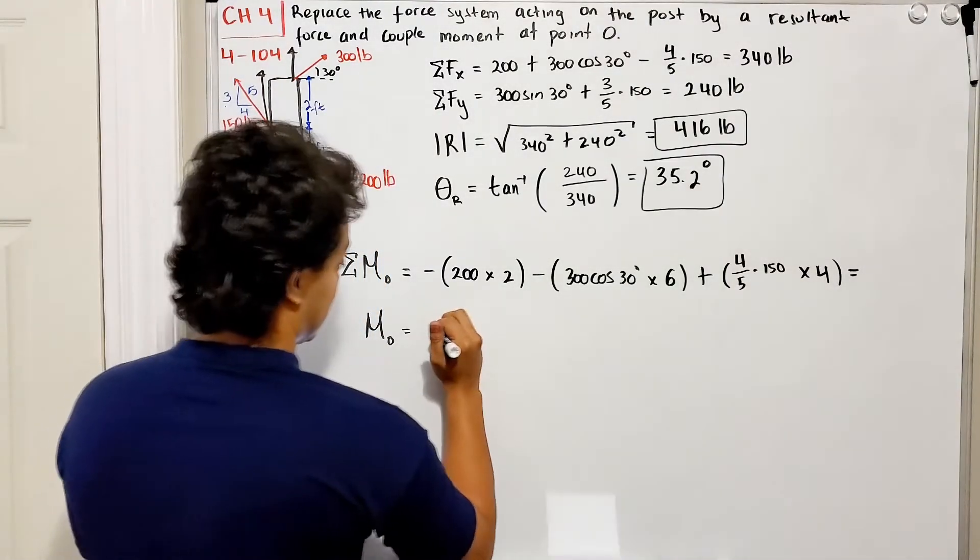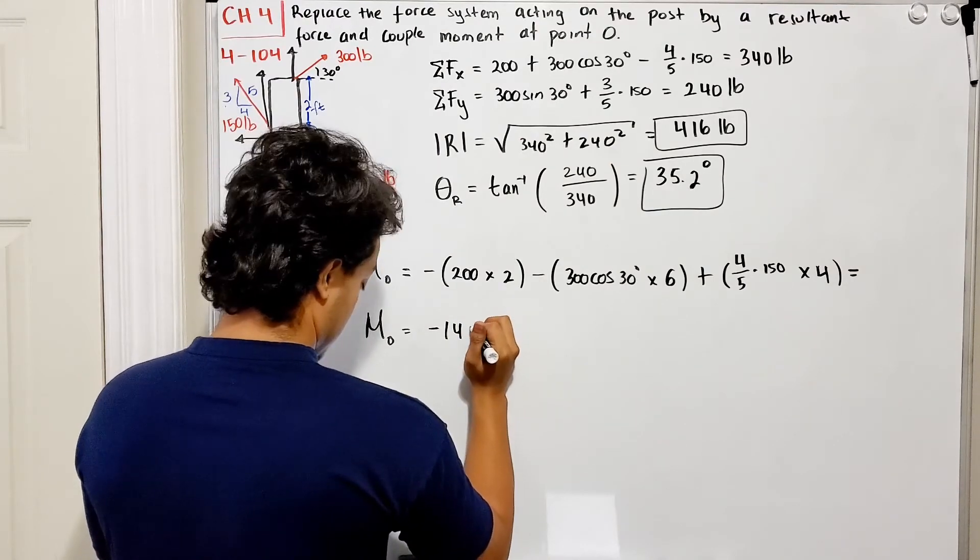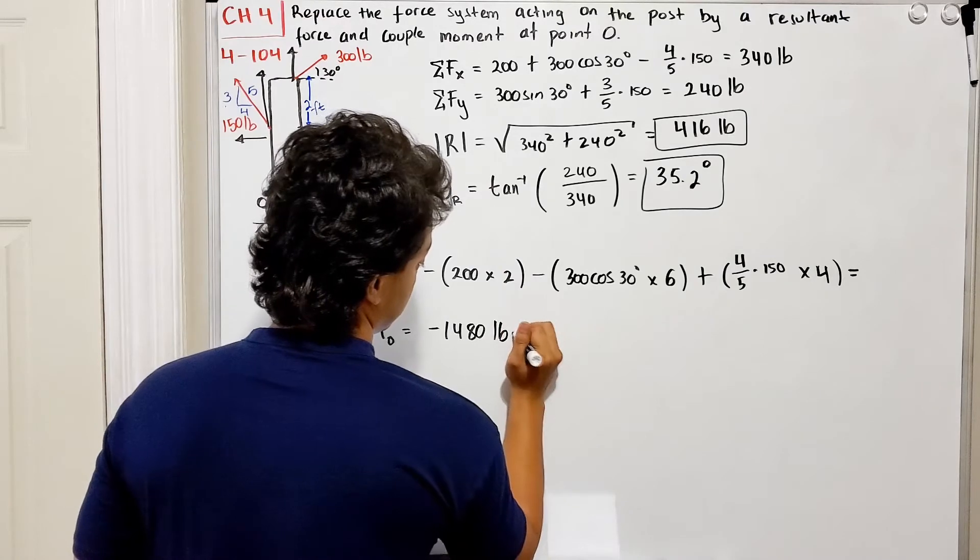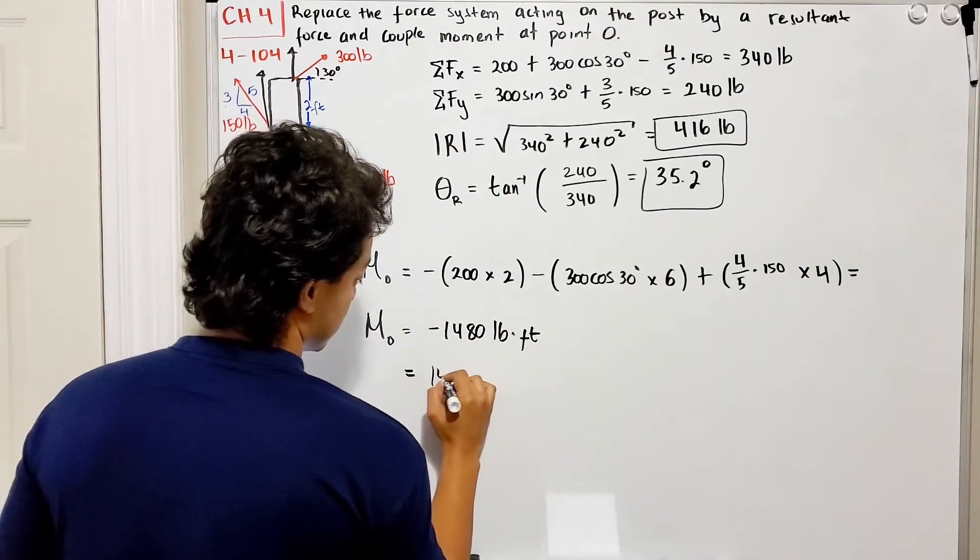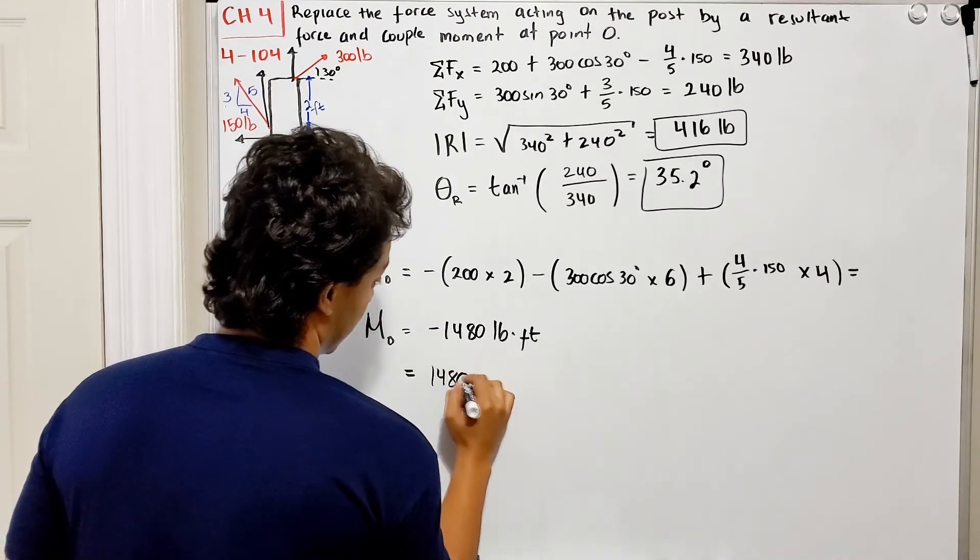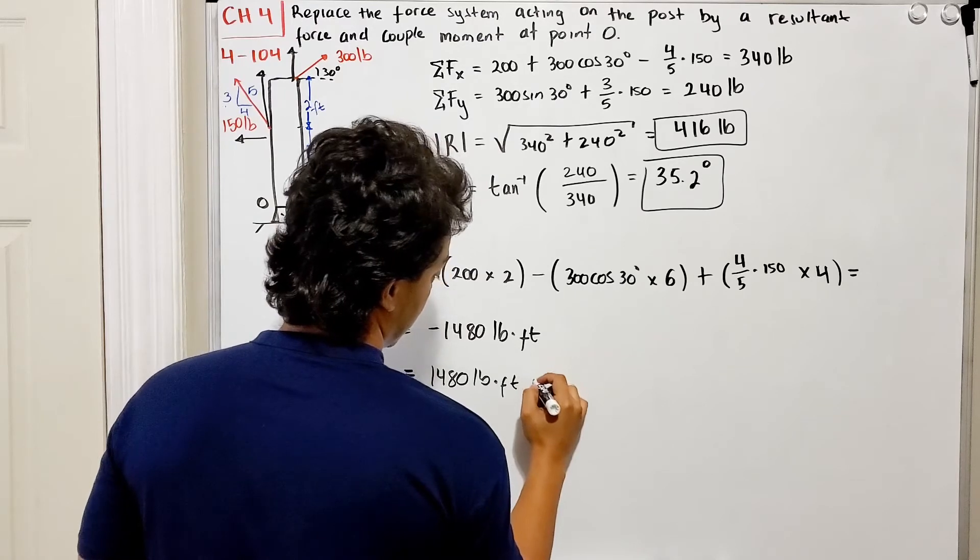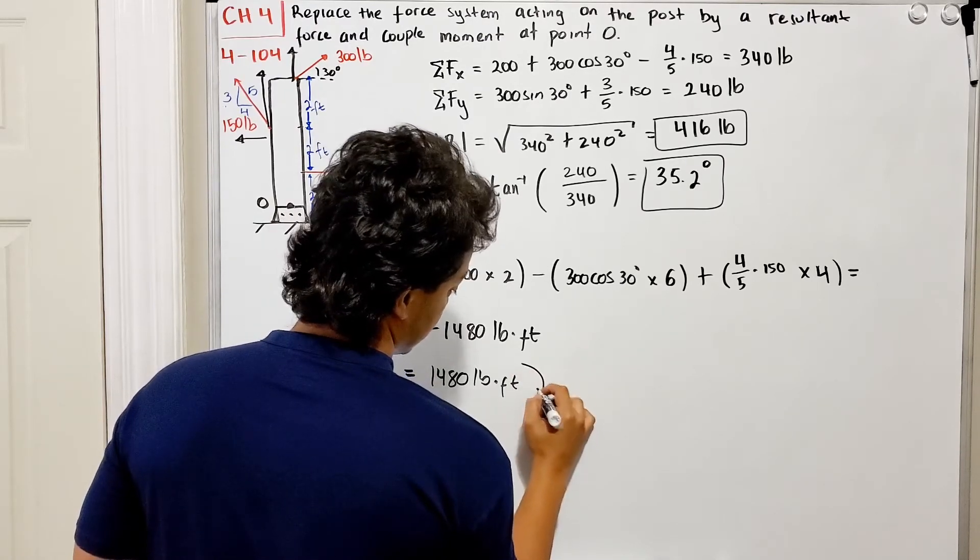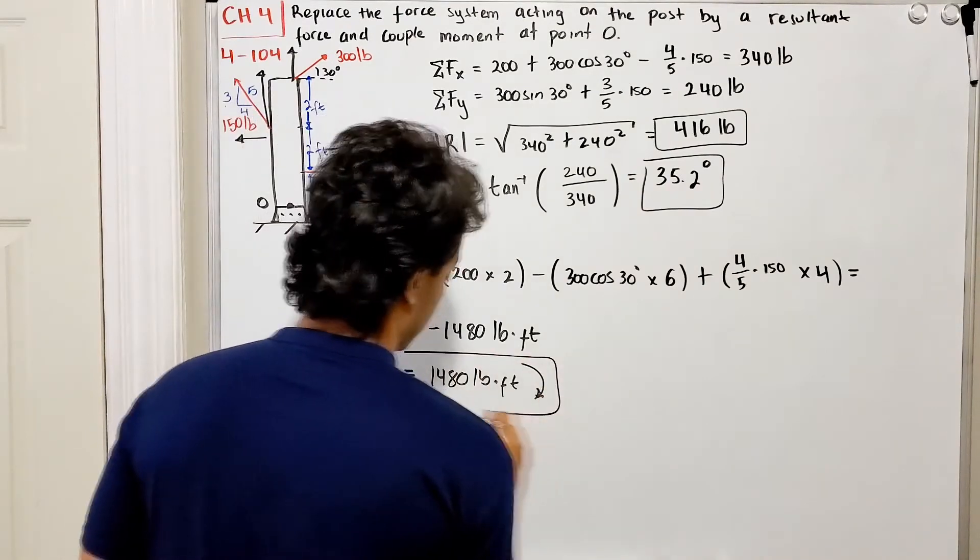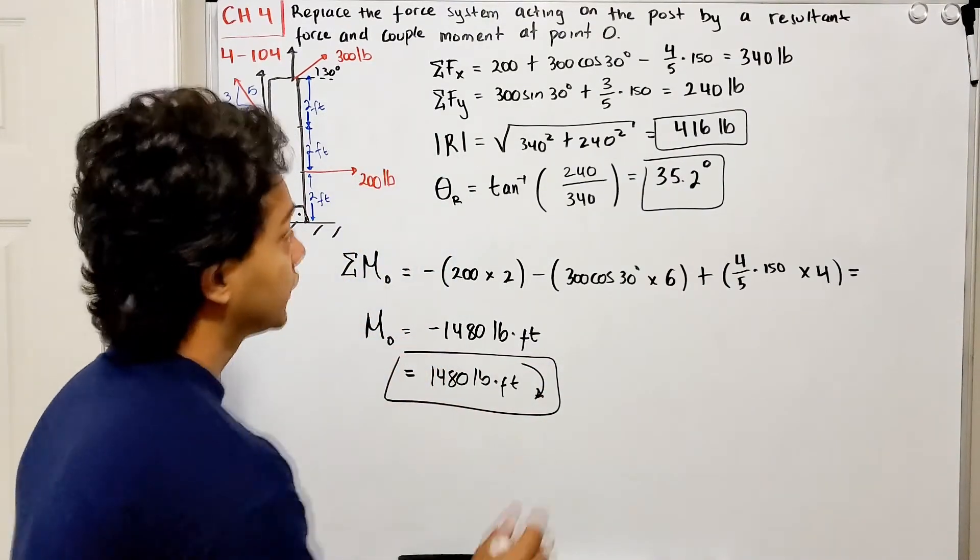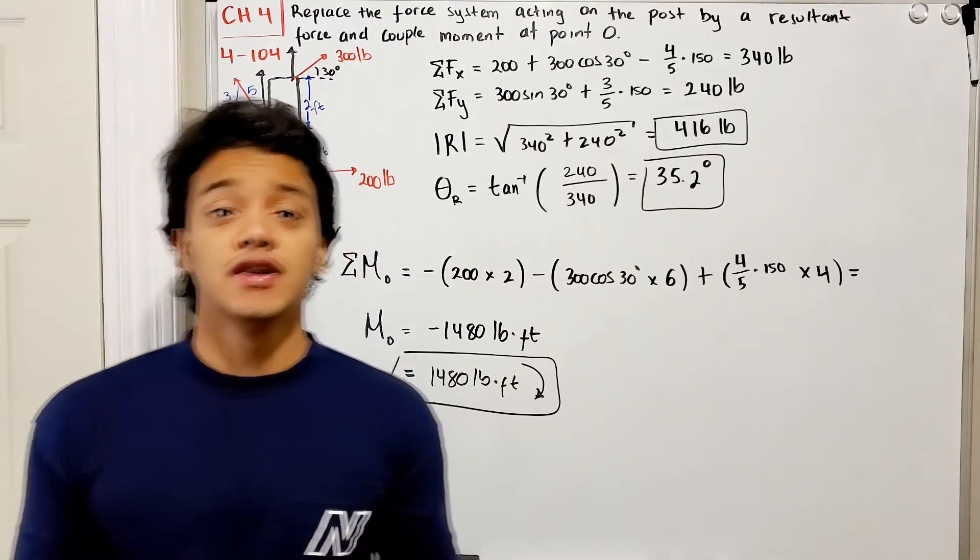This is equal to negative 1480 pounds-feet, basically 1480 pounds-feet going in my clockwise direction. So we found our moment, our resultant, and our angle theta.